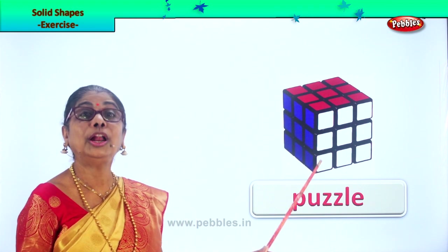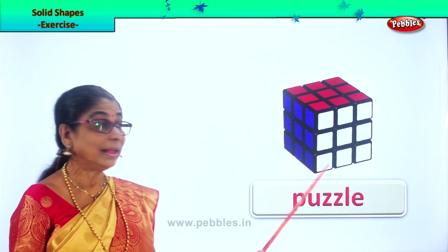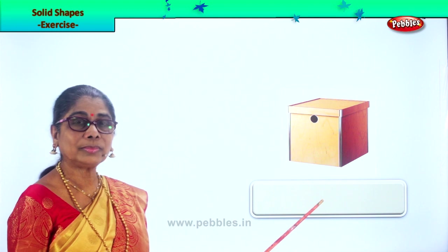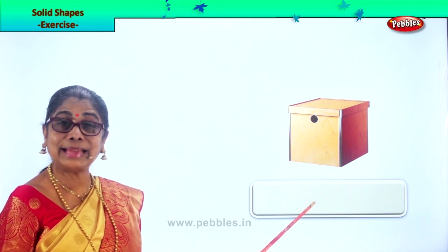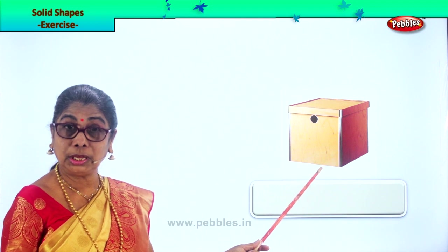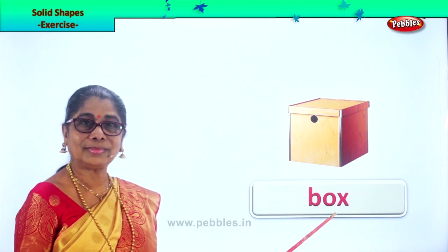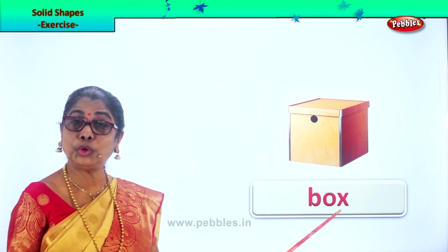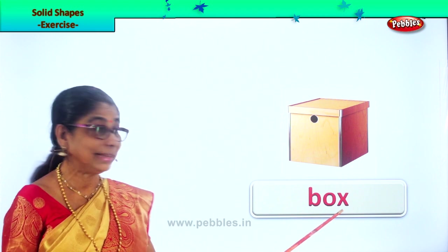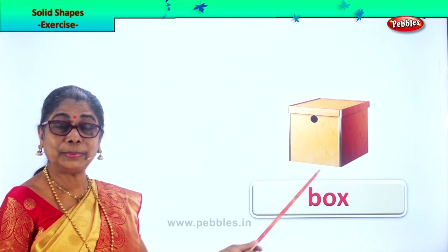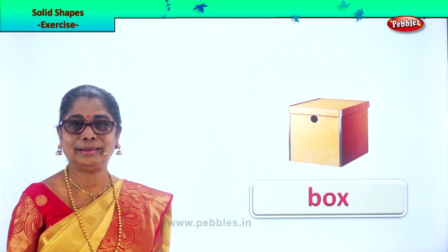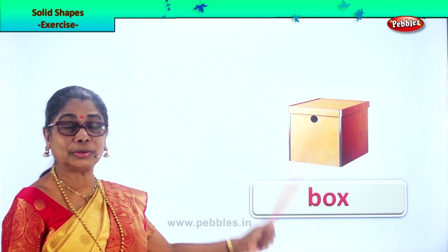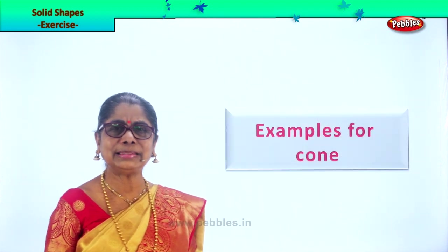Another example of cube — look at this, another cardboard box. Yes, another cardboard box is an example of a cube, solid cube. So now we have looked at many examples of cube. Look at the opposite sides — all sides equal, all faces are equal for the cube. Look at this lovely box. Good.